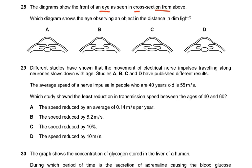Question 29: the diagram shows the front of an eye in cross section from above. Which diagram shows the eye observing an object in the distance in dim light? For distance, the lens is less convex. The answer is B — when looking at a distance, the lens is less convex and the pupil is also large in diameter.